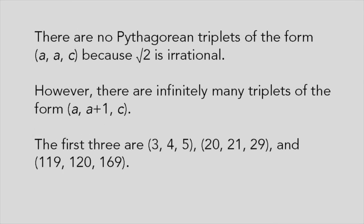Because the square root of 2 is irrational, there can't be any Pythagorean triplets A, A, C. However, there's an infinite number of triplets A, A plus 1, C. The first three of these,